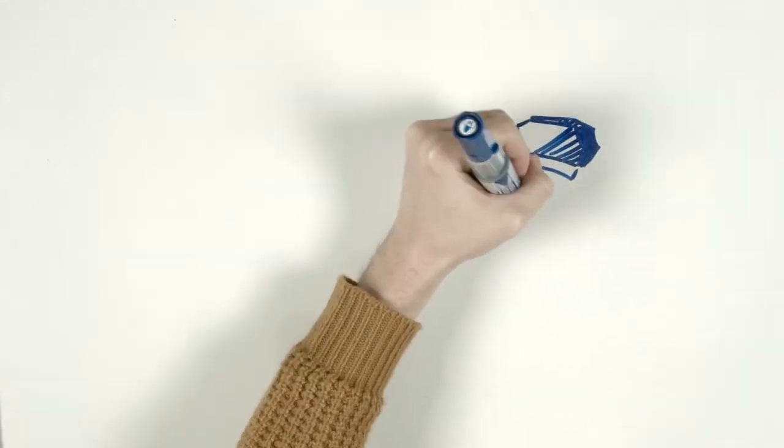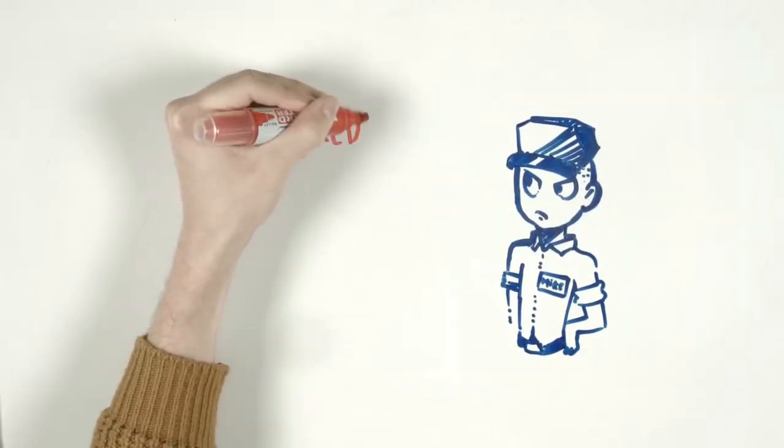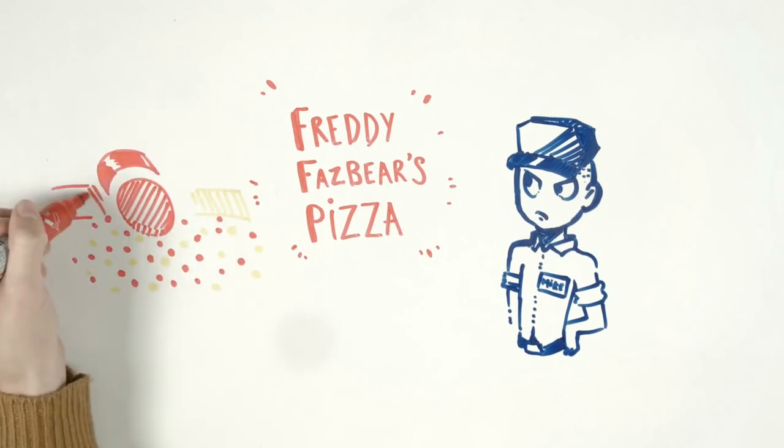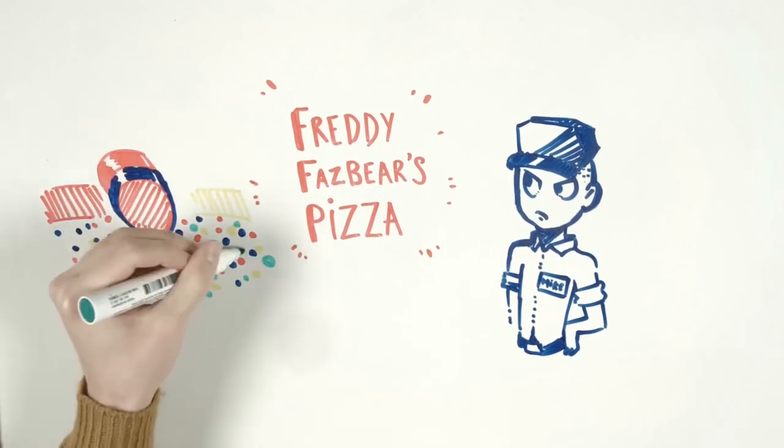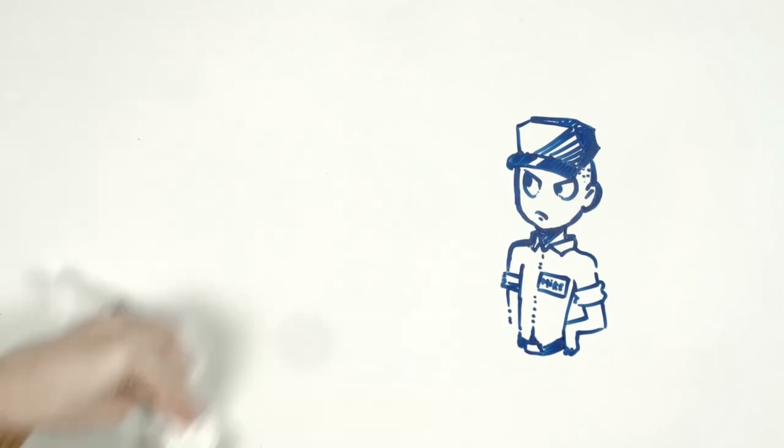The main character is Mike Schmidt. He has started a job working as a night watch security guard at Freddy Fazbear's Pizza, a family restaurant that doesn't have a ball pit for children. Instead, it has four animatronic characters as its main attraction. Such a great idea, right? Or not?